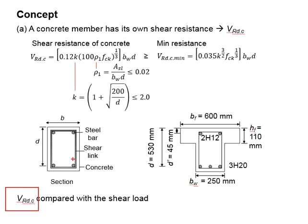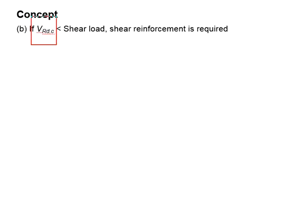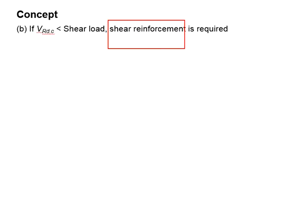If the VRDC provided is greater than the shear load, there is no need for shear reinforcement — we assume that 100% of the shear load shall be taken by the concrete alone. If VRDC is less than the shear load, that means the concrete section alone is insufficient to provide shear resistance, and in this case you will need shear reinforcement.